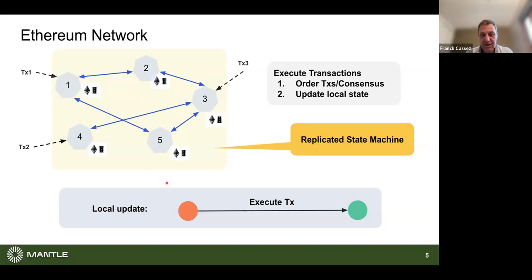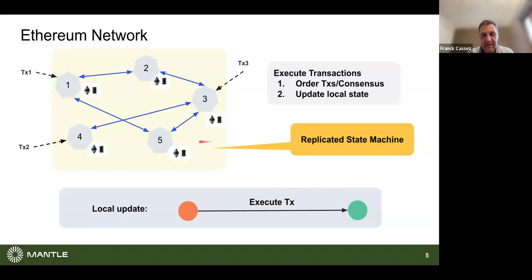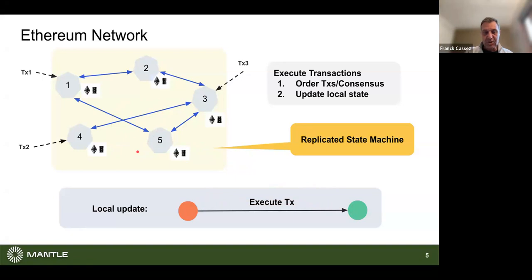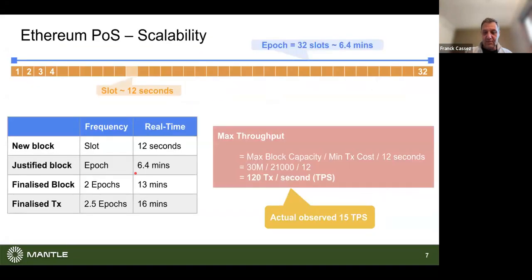At the core of the Ethereum network there's the Ethereum Virtual Machine, which is in charge of computing the next state. You take a given state with the current balances of the accounts, there's a transaction transferring some assets from Alice to Bob, and this EVM executes and produces a new state. In this design there's lots of communication, and there's security provided by mechanisms like staking and slashing nodes that are trying to cheat.